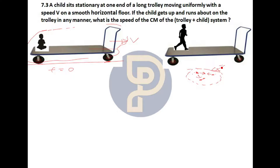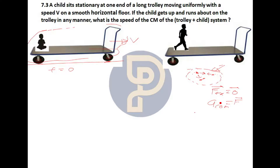And remember: if the external force is zero — if we consider that external force is zero — then for any system where there is no external force, the acceleration of the center of mass will be zero. Because the acceleration of the center of mass equals net external force divided by the mass of the system. If the external force is zero, the acceleration of the center of mass is zero. This means the velocity of the center of mass will be constant.